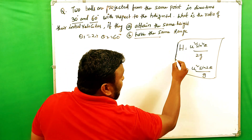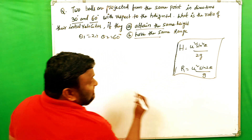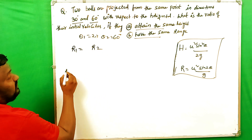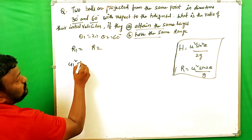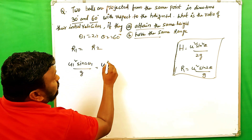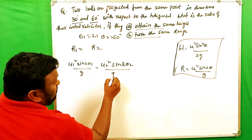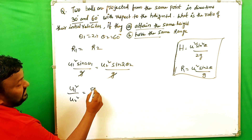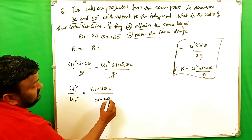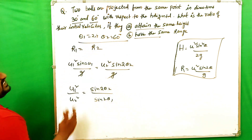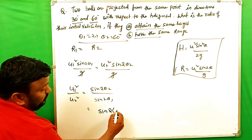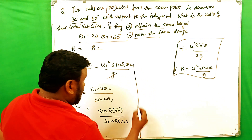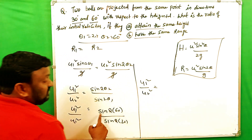Now for the second condition — same range. Using R = u² sin2θ / g, we set r1 = r2. So u1² sin2θ1 / g = u2² sin2θ2 / g. The g cancels, giving u1² / u2² = sin2θ2 / sin2θ1 = sin(2×60°) / sin(2×30°) = sin120° / sin60°.